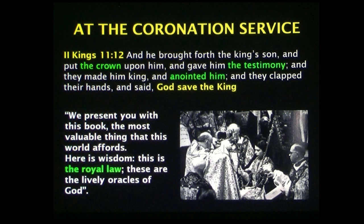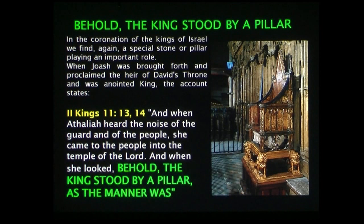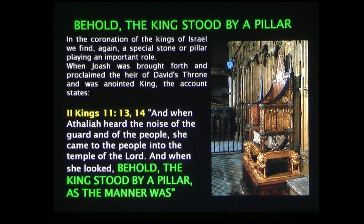From 2 Kings we read: 'He brought forth the king's son and put the crown upon him and gave him the testimony — the Old Testament law — and they made him king and anointed him and they clapped their hands and said God save the king.' This is the tradition from the Old Testament. And this is what they do at modern coronations — presenting the Bible saying 'We present you with this book, the most valuable thing this world affords. Here is wisdom, this is the royal law, these are the lively oracles of God.' The scripture in Kings also says that at the coronation, the king stood by a pillar as the manner was — standing by the pillar which represented this stone and these promises.